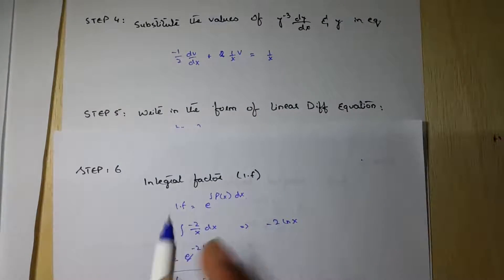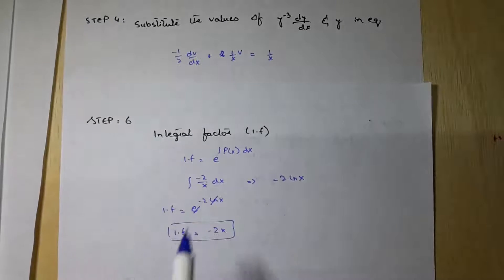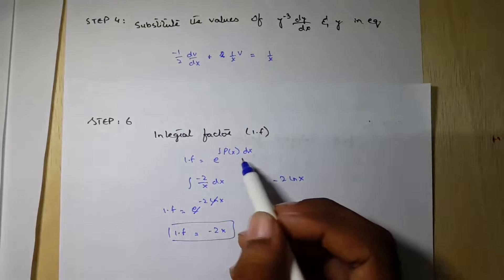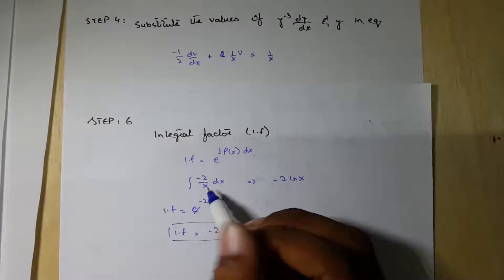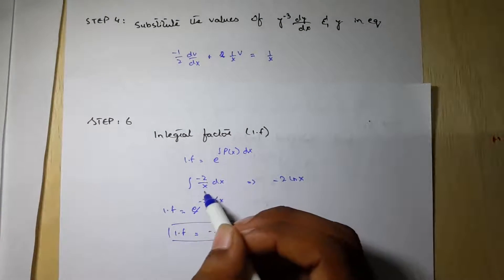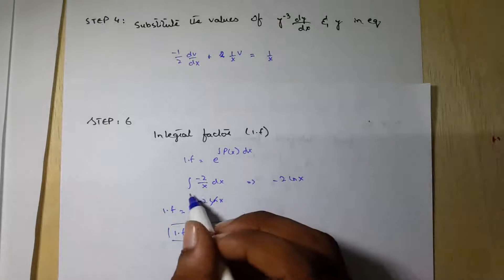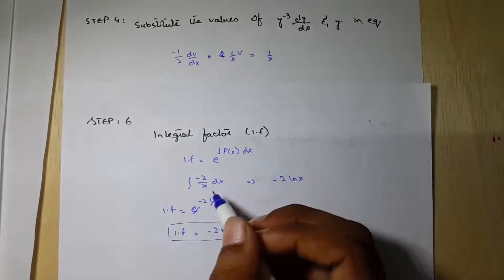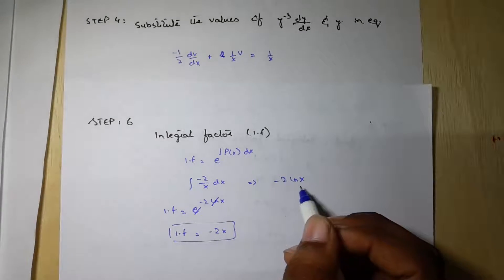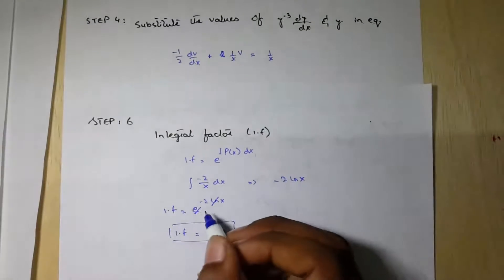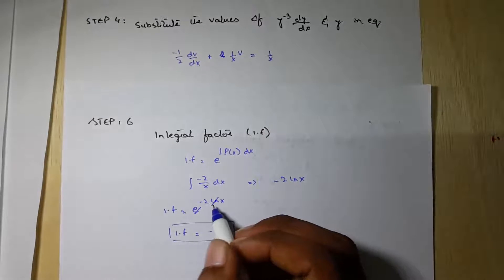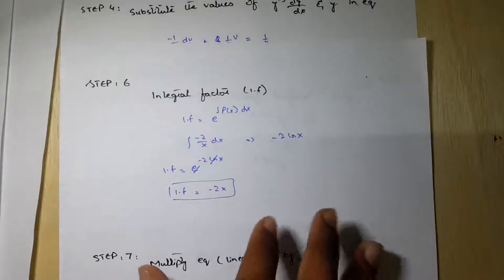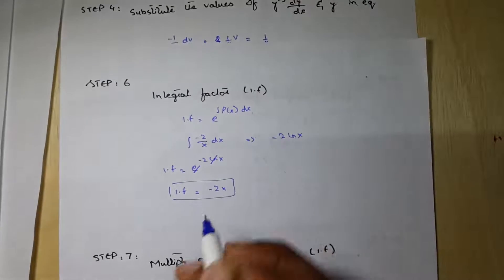Step 6 is the integrating factor. The integrating factor equals e to the integral of the function of x dx. Here the function of x equals minus 2/x. After integration, it becomes minus 2 ln x, and e cancels with ln, so the integrating factor will be x^(−2).